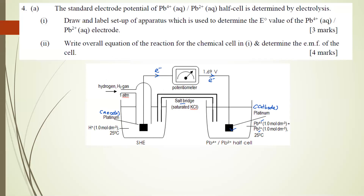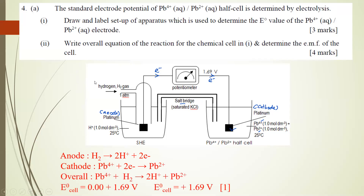Number two — write the overall equation for the reaction and determine the EMF of the cell. You can find the E° values at the back of your book. At the anode: H₂ → 2H⁺ + 2e⁻. At the cathode: Pb4+ + 2e⁻ → Pb2+. So the overall equation is: Pb4+ + H₂ → 2H⁺ + Pb2+. The E° cell equals positive 1.69 V. That is how you solve question 4a(1) and 4a(2).